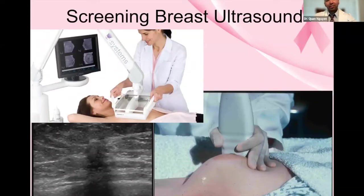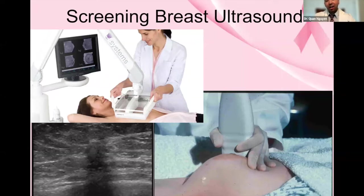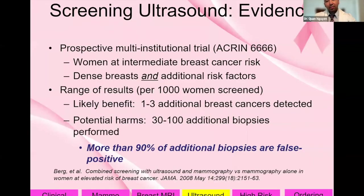Screening breast ultrasound is the third tool we discussed. Like 3D mammography, it is not limited by breast density. However, the main disadvantage of screening ultrasound is that more than 90% of the biopsies recommended from screening ultrasound are false positive recommendations — findings that do not end up being cancer. It has a very high false positive rate.